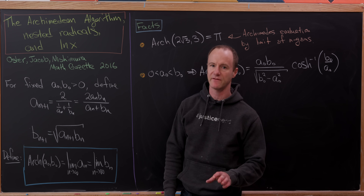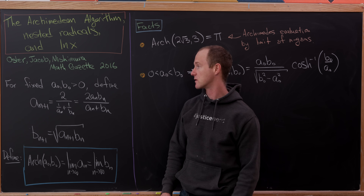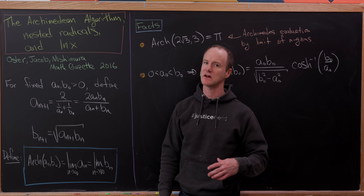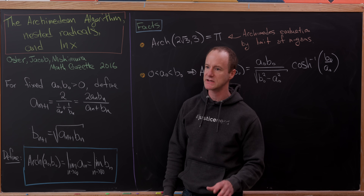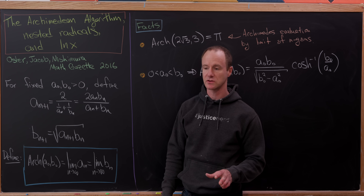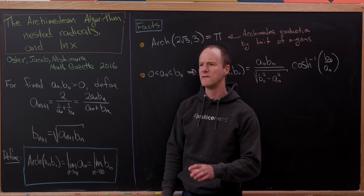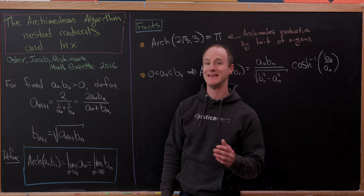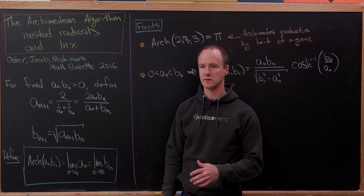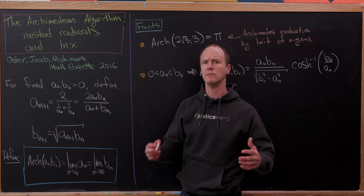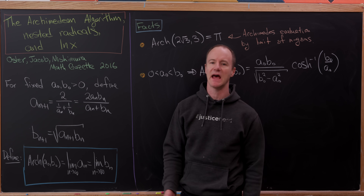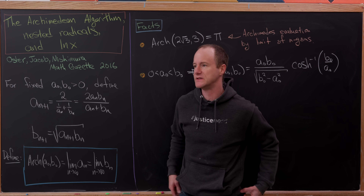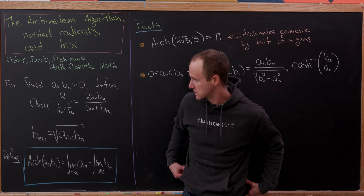Today I've got this nice result that I found in the Mathematical Gazette that allows us to write the natural logarithm via a product of nested radicals that become more nested as we move down the product.